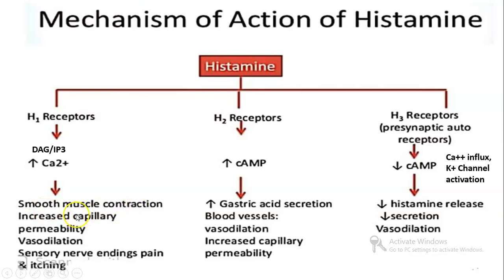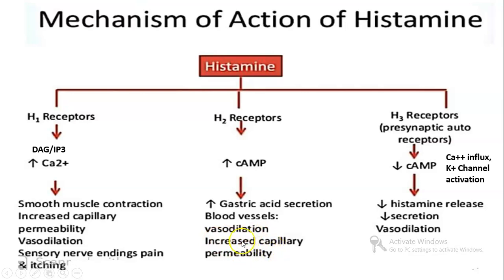As a result of increasing calcium levels, H1 receptor activation causes smooth muscle contraction, increased capillary permeability, vasodilation, and sensory nerve ending stimulation leading to pain and itching. H2 receptors increase cyclic AMP, and as a result they increase gastric acid secretion, cause vasodilation of blood vessels, and increase capillary permeability.